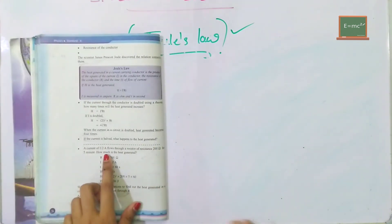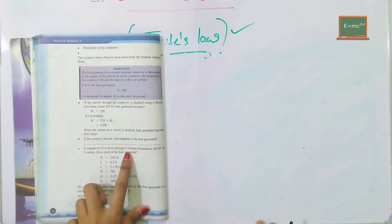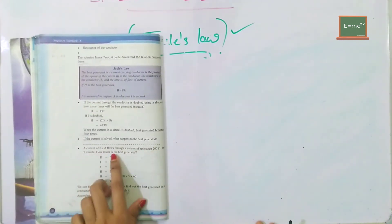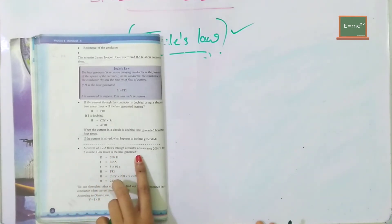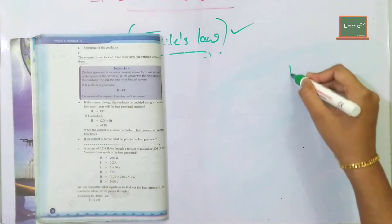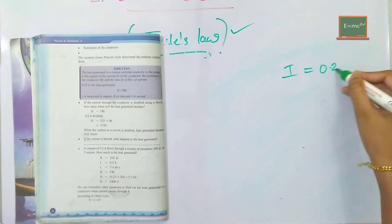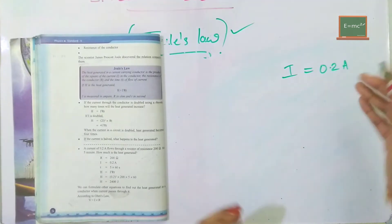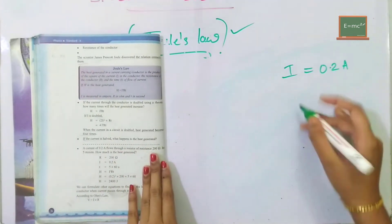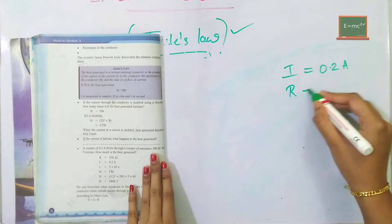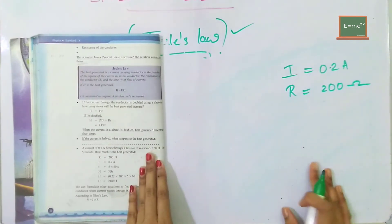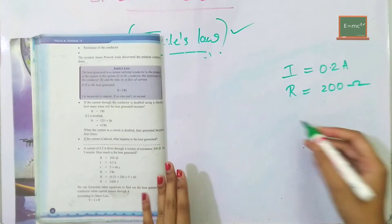A current of 0.2A flows through a resistor of resistance 200 ohm for 5 minutes. How much heat is produced?